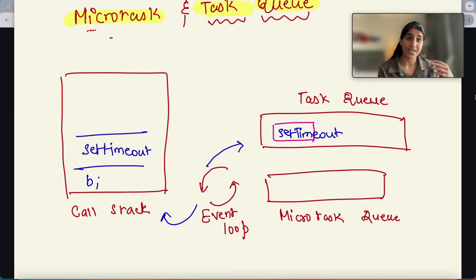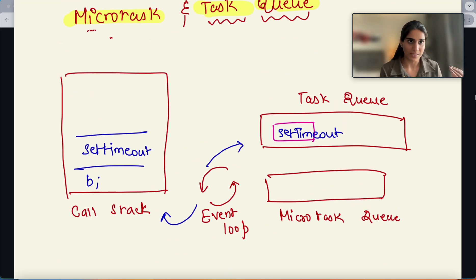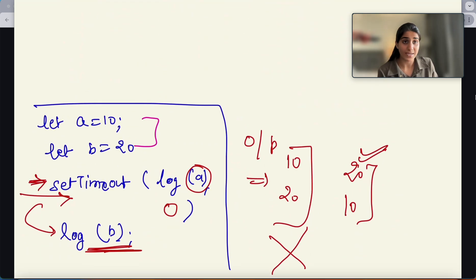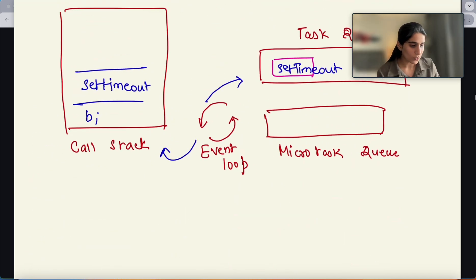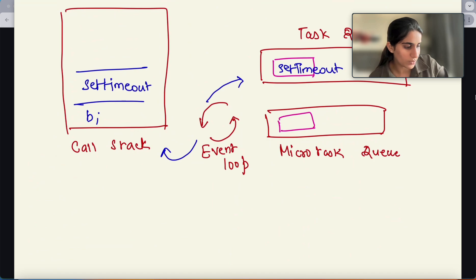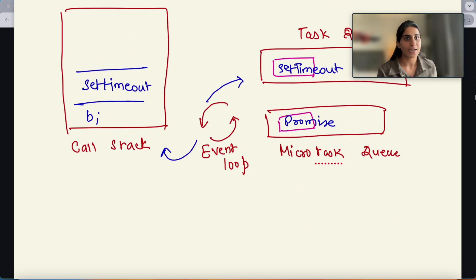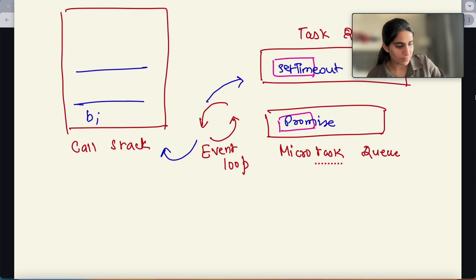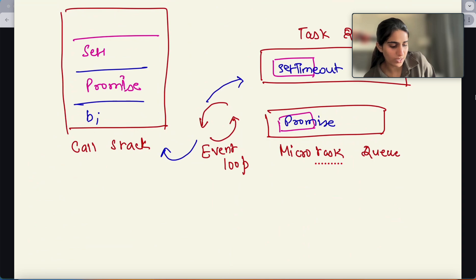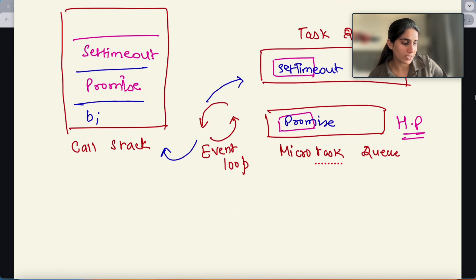Now why do we have two different queues? Because we have multiple different types of functions — setTimeout, setInterval, and then we have promises with resolve and reject. The microtask queue has higher priority than the task queue. So if we have setTimeout and a promise, the promise will be placed in the microtask queue and then setTimeout will go into the task queue. Microtask queue is highest priority and task queue is lower priority.